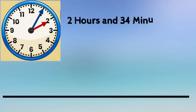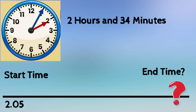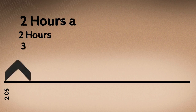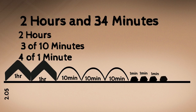Now let's say you are given a start time of 2:05 and told that two hours and 34 minutes have passed. Your job is to find the ending time. First, I'm going to break up the time duration of two hours and 34 minutes: that's two hours, three 10-minutes, and four 1-minutes. Then I'll show that time duration on my line using mountains, hills and rocks — two 1-hours, then three 10-minutes, then four 1-minutes.